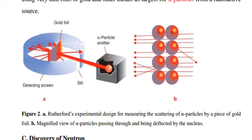Rutherford's experiment was designed for measuring the scattering of alpha particles by a piece of gold foil. The diagram shows a magnified view of alpha particles passing through and being deflected by the nucleus.